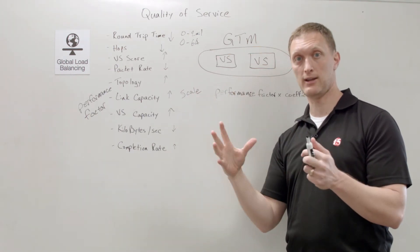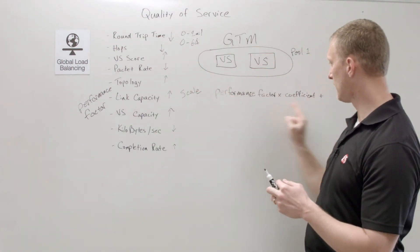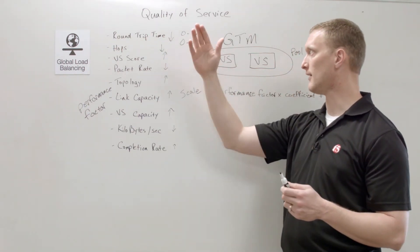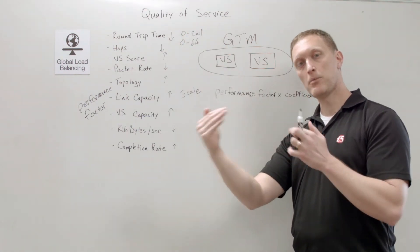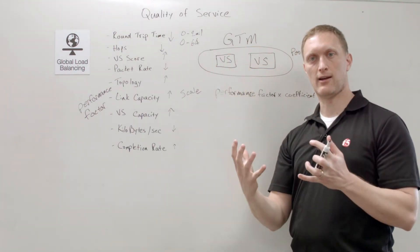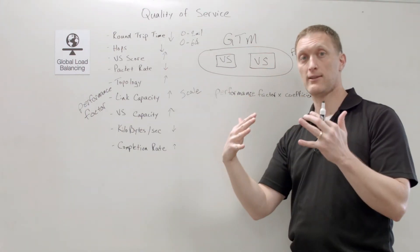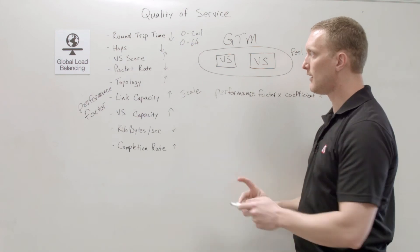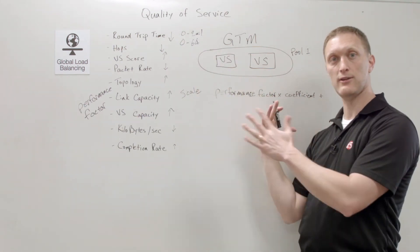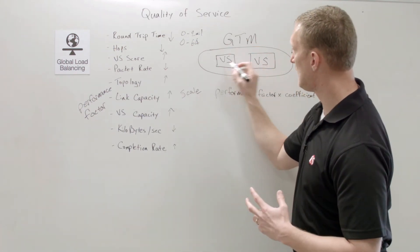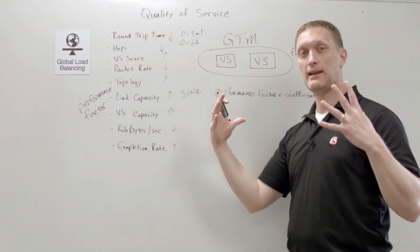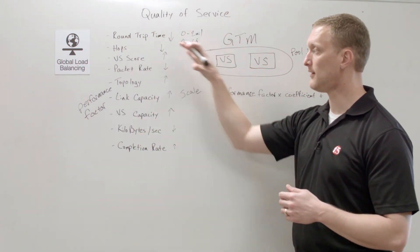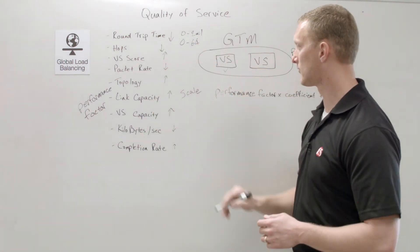To handle the scale issue, the GTM normalizes each value when doing the math. For each performance factor and coefficient, it looks at the raw metrics — say round trip time is 50 microseconds — and normalizes that to a value between 0 and 10 to use in the equation. You take all the factors and coefficients, run them through this equation, and come up with an overall quality of service score for each virtual server in your GTM pool. The virtual server with the better quality of service score is the one that gets selected.